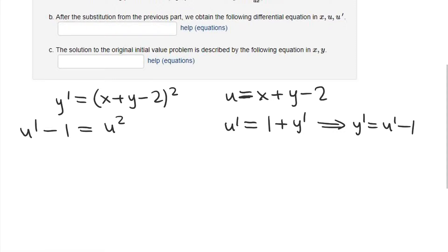From here, again, this is not even a linear equation because we have a u² term. However, notice that if I isolate u', I get u² + 1. In other words, the derivative of u equals a function of u times a function of x, which is just 1 in this case. So this is a separable differential equation.